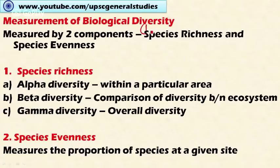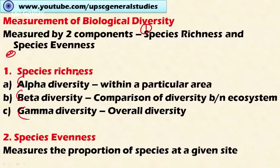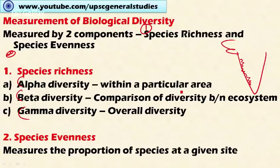Biodiversity based on species richness can be measured using two components. The first is alpha diversity, beta diversity, and gamma diversity. Alpha diversity refers to the diversity variation within a particular area or ecosystem, usually expressed as the number of species in an ecosystem. For example, the number of species present in the Western Ghats of India is considered as its alpha diversity — more species means higher alpha diversity.